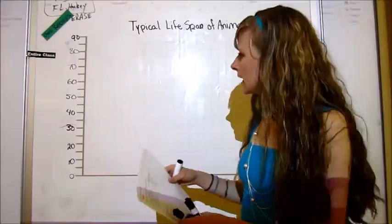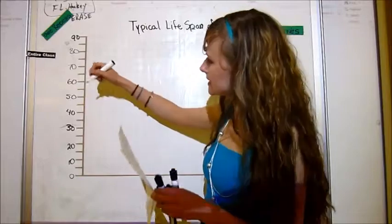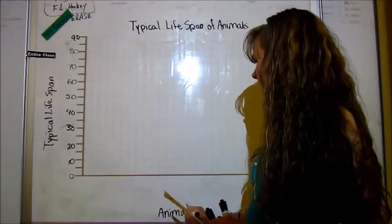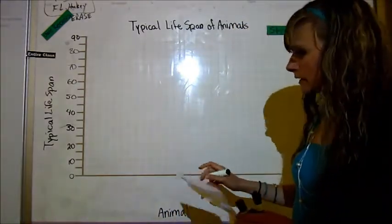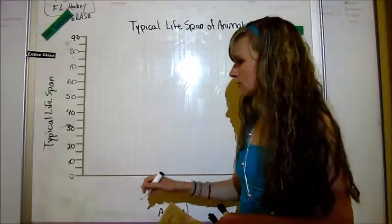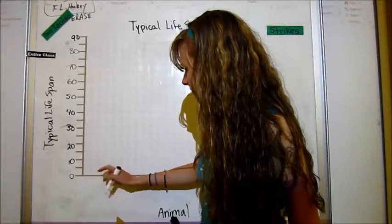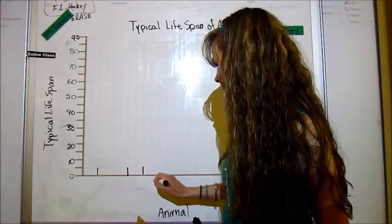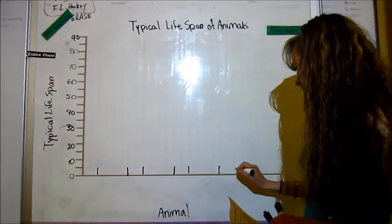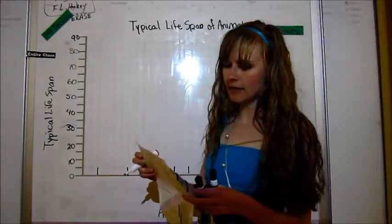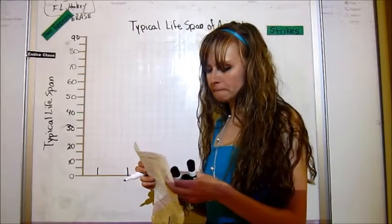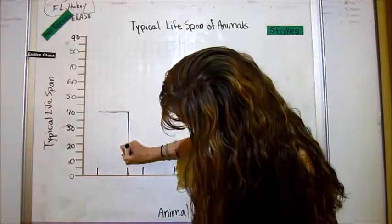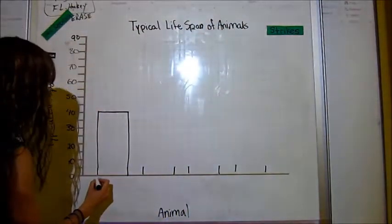Next, what I need to do is I need to label my axes. So this is typical lifespan and this is animal. I got to decide how thick I want each one to be. There's four and there's a whole bunch here. So I'm just going to do four bars each time and then skip two. I think I should be able to do that. That fits perfect. We want to use up the space on our paper.